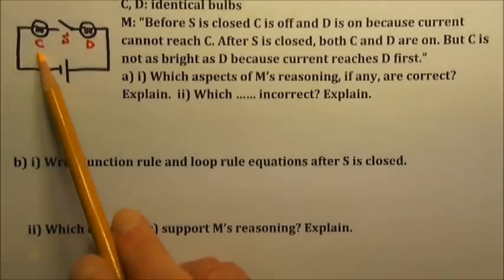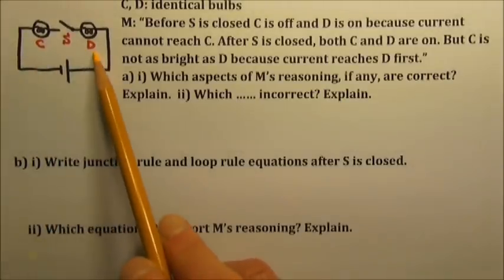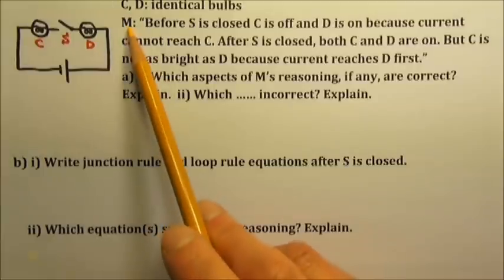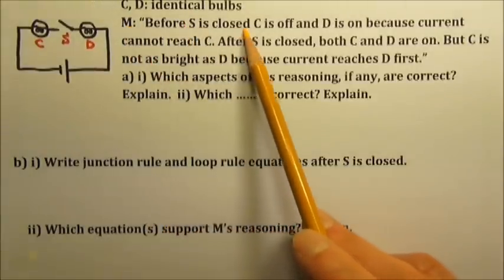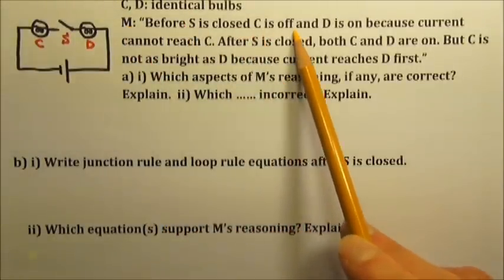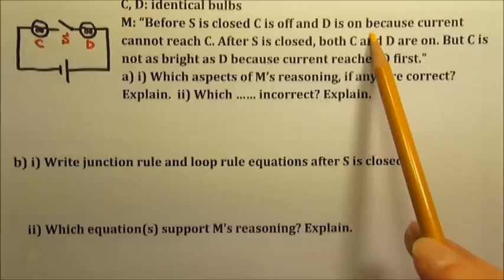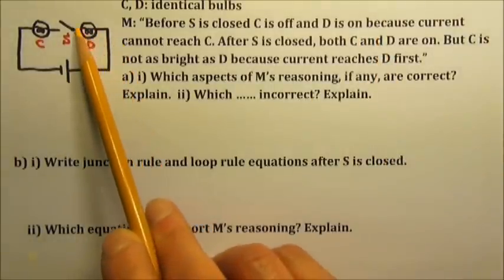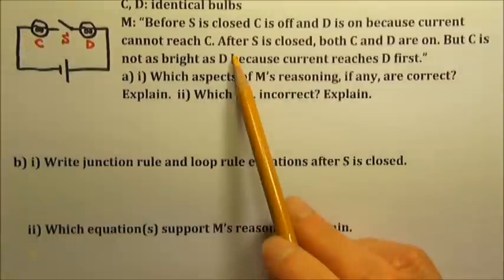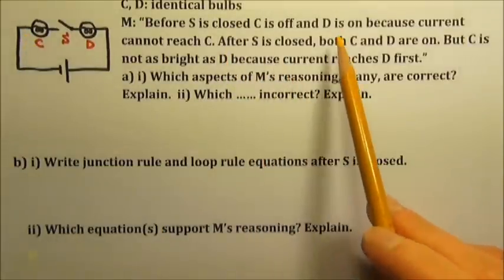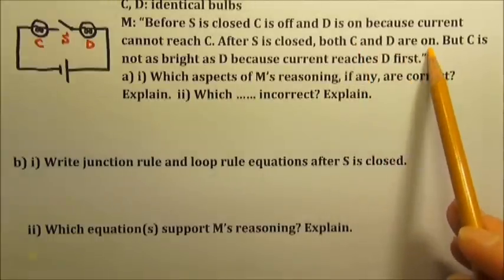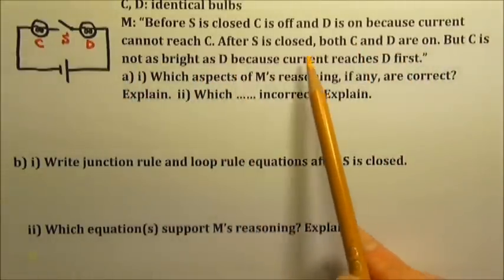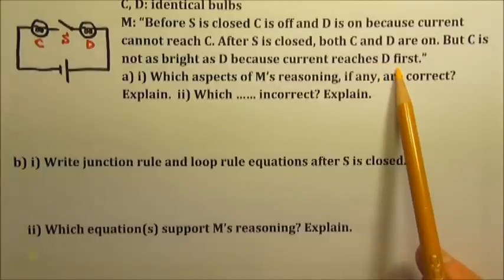In this circuit, there are two identical light bulbs, a switch, and an ideal battery. Student M says: before the switch is closed, bulb C is off and bulb D is on, because the current from the battery cannot reach C. After the switch is closed, both bulbs C and D are on, but bulb C is not as bright as D because the current reaches D first.